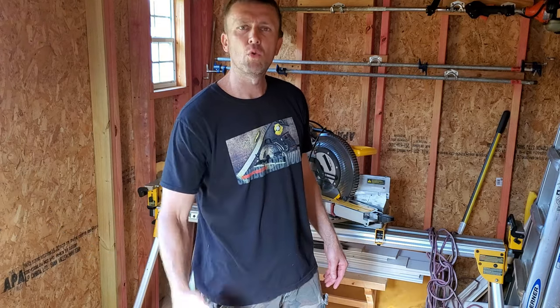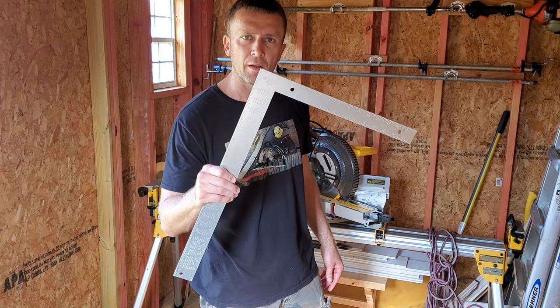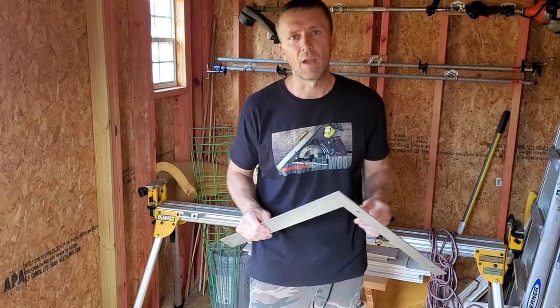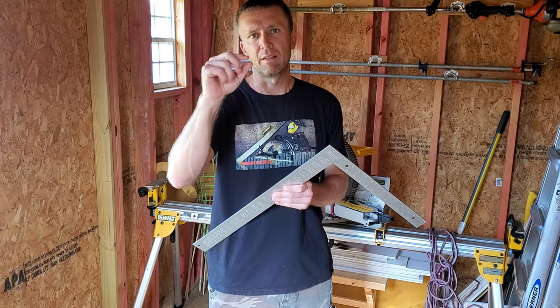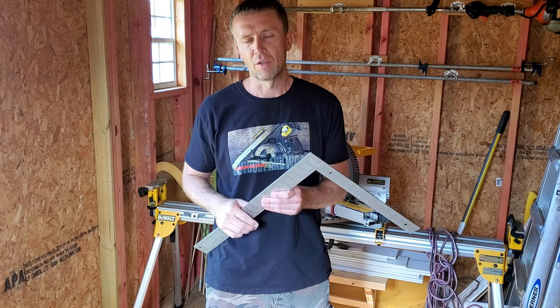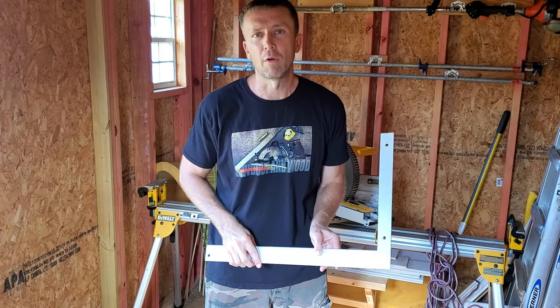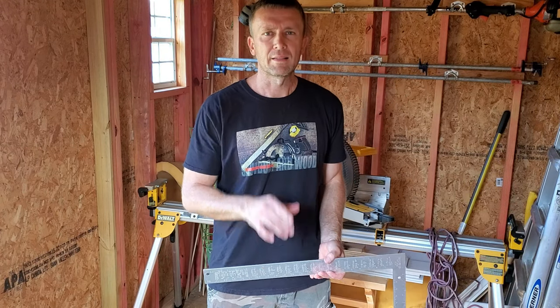Today I'm going to teach you how to take any board, use this square, and equally divide it into strips. Let's say you have a one by six and you need to divide it into six equal portions or four equal portions or two equal portions. I'm going to show you a really easy way to do it with this square. Let's get to it.